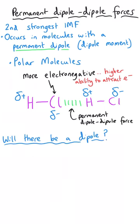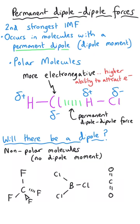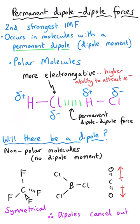It's important to note that whilst some molecules have dipoles in particular bonds, they can actually end up being non-polar if they are symmetrical molecules. What that means is the dipoles cancel each other out, and we say the molecule has no dipole moment, meaning the molecule as a whole will be non-polar. So there won't be any permanent dipole-dipole forces between molecules of this type, and therefore the boiling point might be a little lower than you might expect.